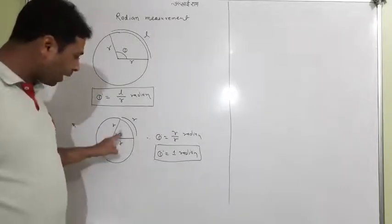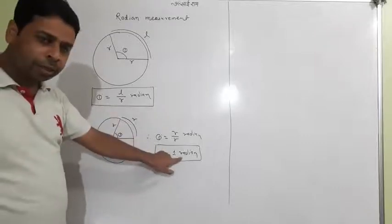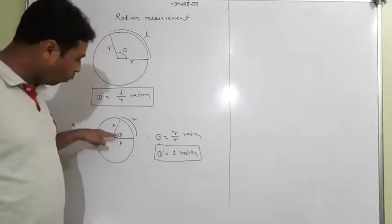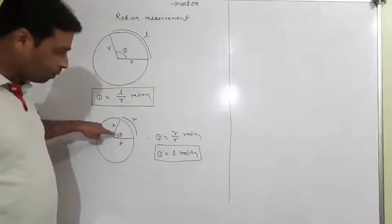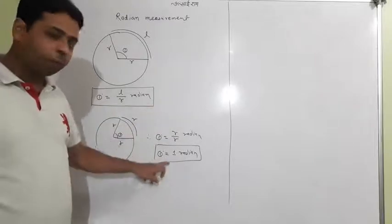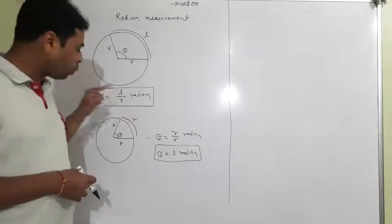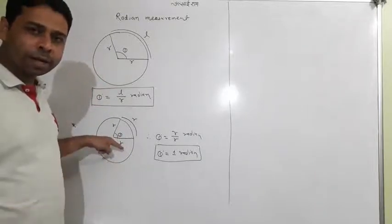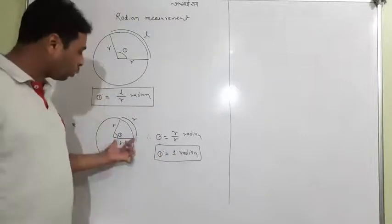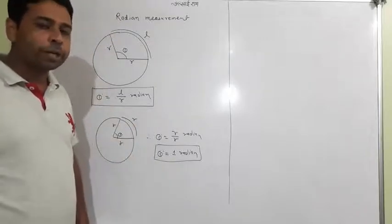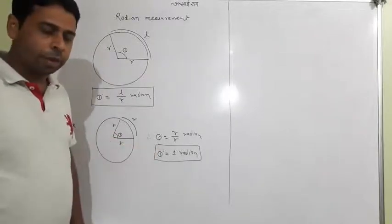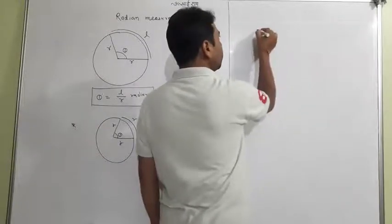We can see theta degree equals 1 radian. What is the value of 1 radian in degrees? Right now it appears to be an acute angle — it may be 50, 60, 45, or something like that — I don't know yet, but later it will be a good question. Keep in mind that whatever theta degree appears here, which looks like an acute angle, that is the value of 1 radian. When two radii intersect and the arc length equals the radius, that central angle is called 1 radian.